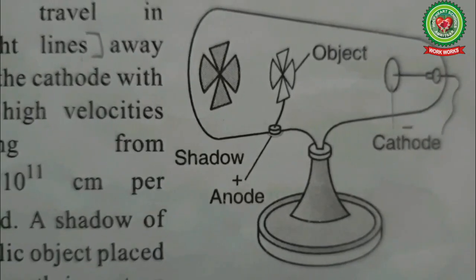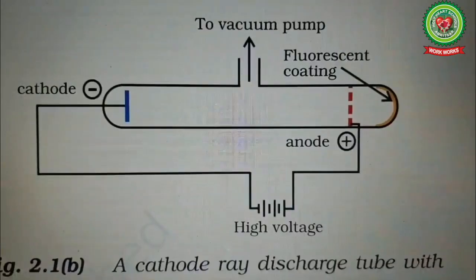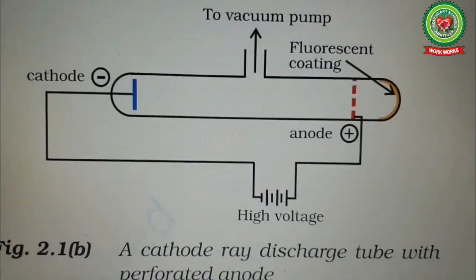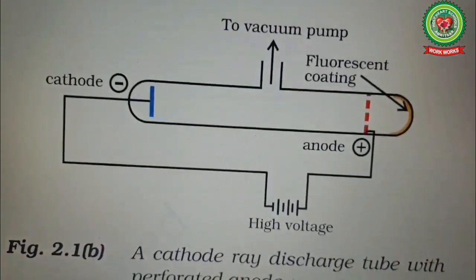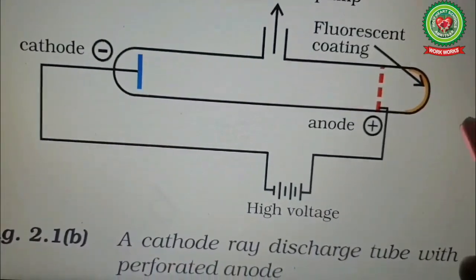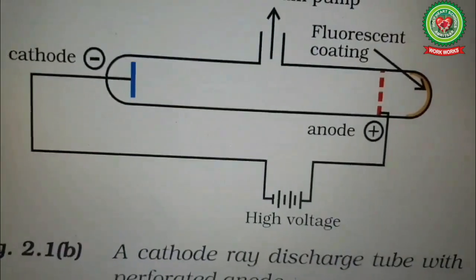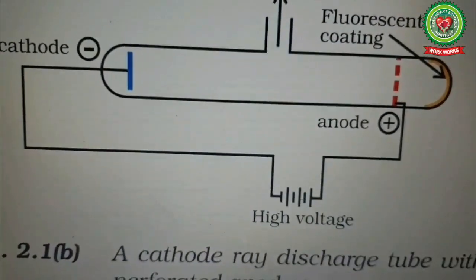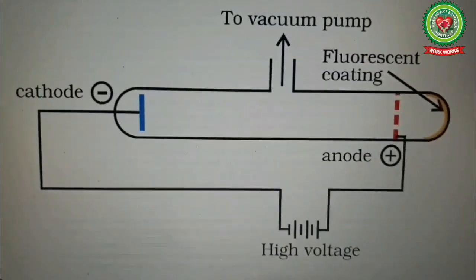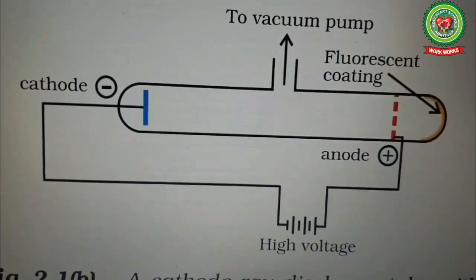The second property was that the rays can produce a green glow when made to fall on any fluorescent substance. Since the rays are invisible, scientists made the anode perforated. What happened was that when the rays passed from cathode through the perforated anode, they hit the fluorescent screen placed beyond the anode, causing it to glow green.